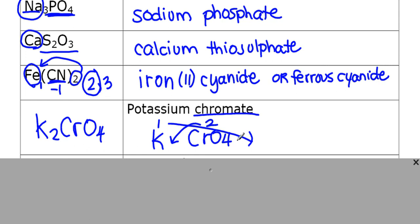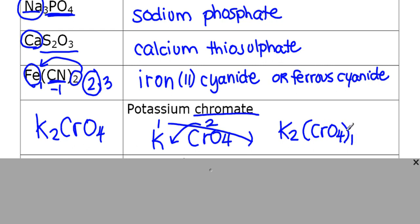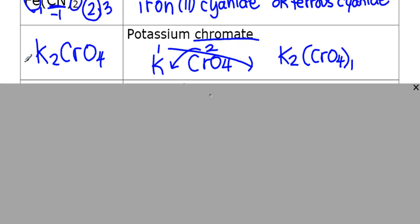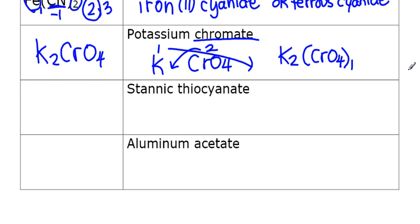With polyatomic ions, you need brackets around them when the subscript is greater than one. When we crisscross and get a 1 for the entire polyatomic ion, the bracket isn't needed. But when the subscript is larger, the bracket around the whole ion is essential. Now try the next two examples — pause the video and then we'll look at them together.